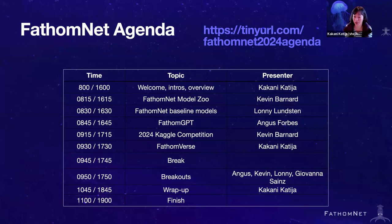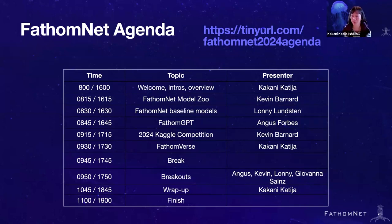Kevin is going to take on talking about the FathomNet Model Zoo, followed by Lonnie, who'll talk about some of the baseline models we've been training for use with the community. Angus Forbes is going to be talking about FathomGPT, which is really exciting — it's going to be an official unveiling of this feature. Then Kevin will follow up with a Kaggle competition description planned for this year, and I will talk briefly about FathomVerse before a short break, breakouts, and a wrap-up covering future steps and directions for FathomNet.